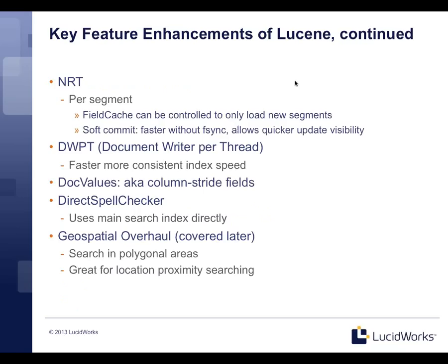Also at the Lucene level, there are great benefits around near real-time (NRT) capabilities, which stem from improvements at the Lucene level — particularly being able to do soft commits where commits happen faster without fsyncing to the file system, giving you better visibility. The field cache can also be controlled to load on a per-segment basis, which affects sorting, faceting, and function queries. Being able to warm the field cache based on just a few new documents in a quicker way is what enables near real-time — seeing those documents much quicker.